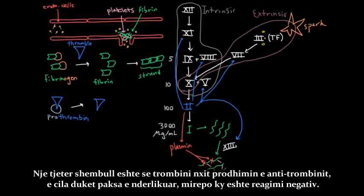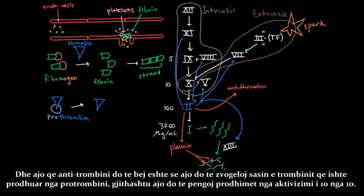And so another example is that thrombin actually stimulates the production of antithrombin, which is kind of counterintuitive but that's sort of classic negative feedback. And what antithrombin is going to do, as you could guess, is it's going to decrease the amount of thrombin that's being produced from prothrombin, and it's also going to impede the production of activated 10 from 10.